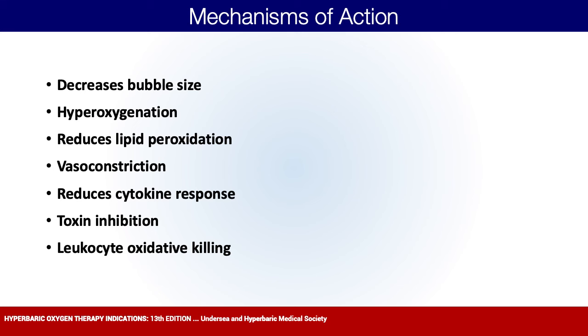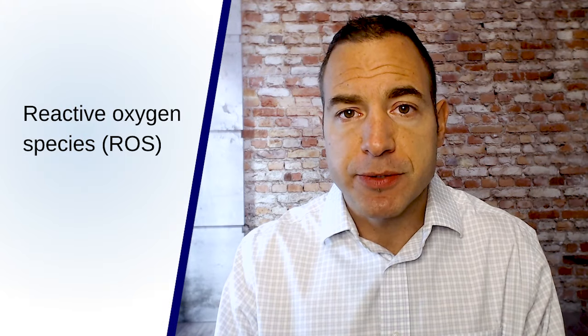Leukocyte oxidative killing: part of our white blood cells' ability to fight infection involves using reactive oxygen species and literally spilling those contents onto viruses or bacteria to kill the infection. Hyperbaric does increase your reactive oxygen species, and part of the benefit is that as you increase active oxygen species, you're loading your white blood cells with the ammunition they need to fight infection better.